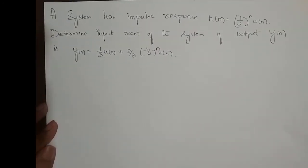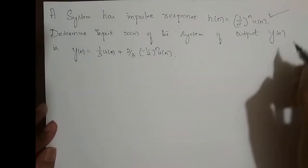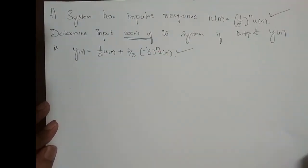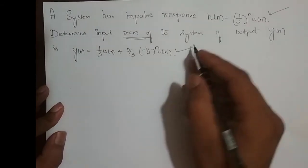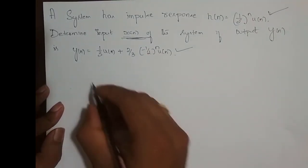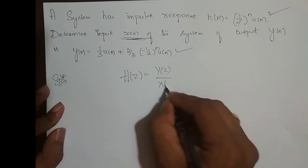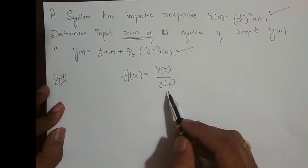We will take one more problem, but I will only give you an idea and intermediate results for you to check your answers. A system has a given impulse response h(n) and output y(n); we need to find the input x(n). Since H(z) = Y(z)/X(z), our aim is to find x(z) = Y(z)/H(z), and then take the inverse Z-transform to get x(n).